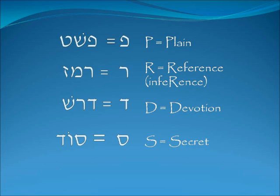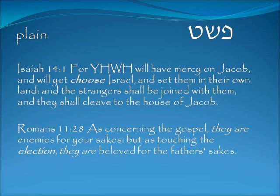Looking over all the definitions of who are the elect, we find it falls into four categories of PARDES. If you haven't studied what PARDES is in terms of studying scripture, there are other videos on the subject. Basically we have: the plain meaning of the text (peshat), the inferential meaning (remez), the devotional meaning we dig out (drash), and the secret or hidden meaning of the text (sod), which may relate to the end times.